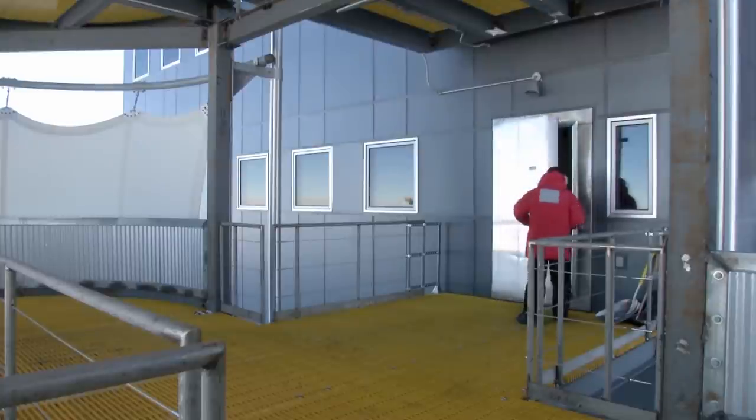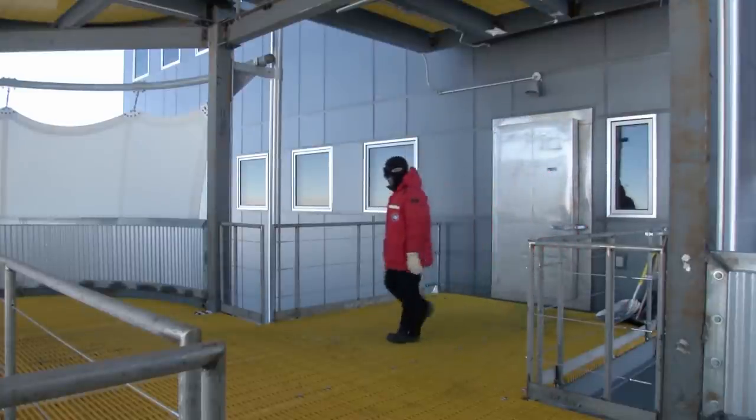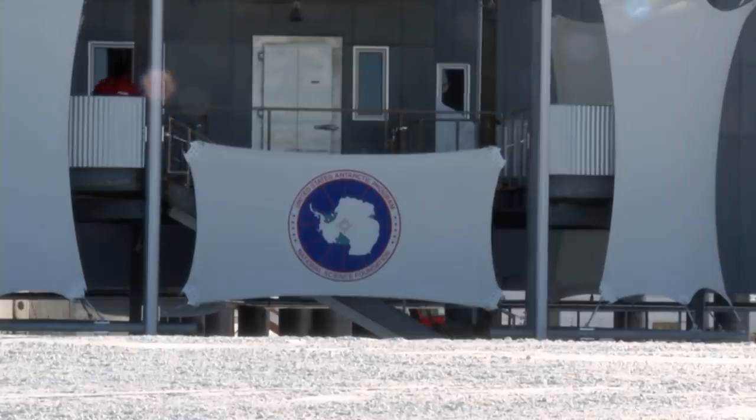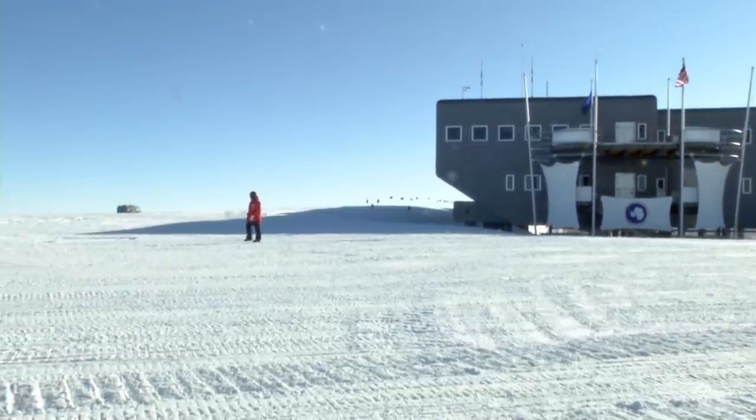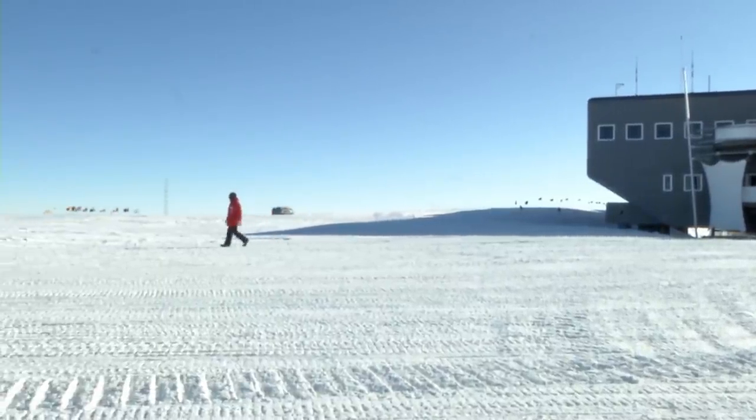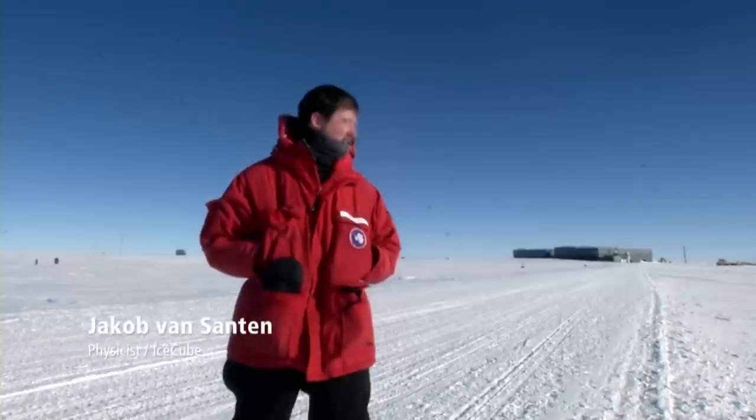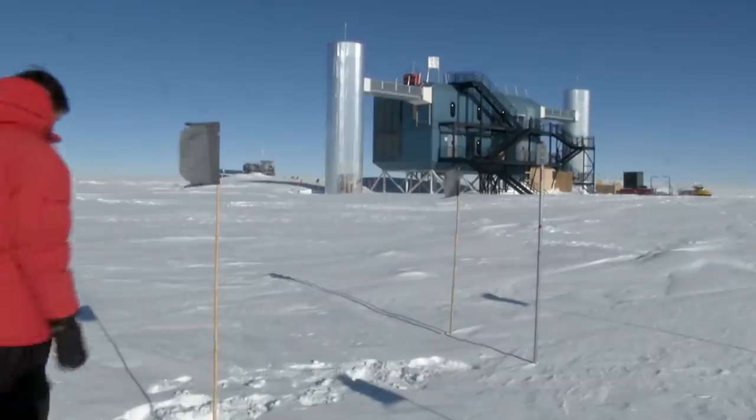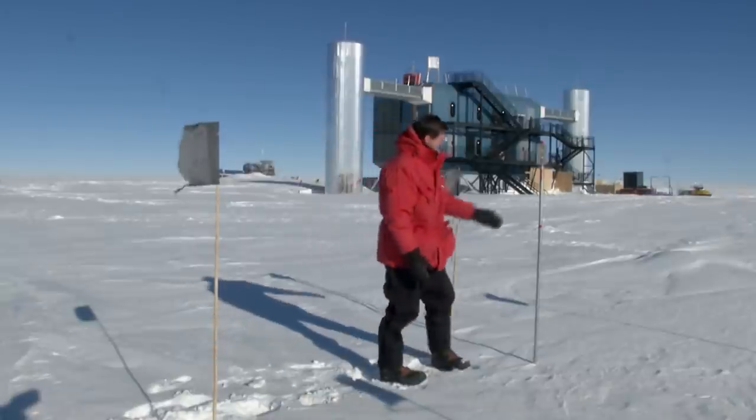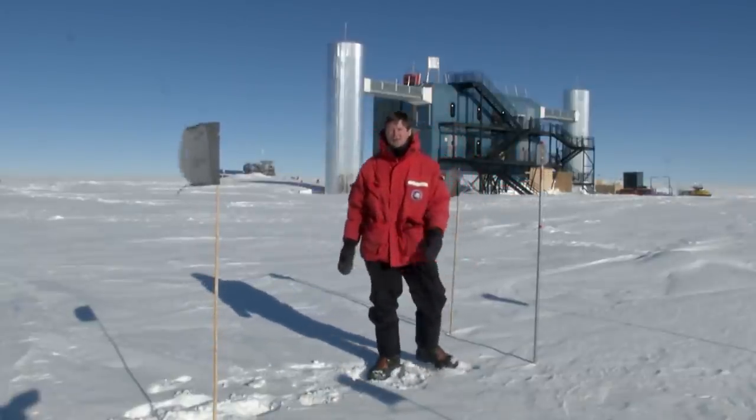In the Scott Amundsen Station at the South Pole, Jakob van Santen is now feeling at home. He can reach the IceCube on foot. It's a beautiful day, almost no wind, summer temperatures of minus 30 degrees Celsius, glorious sunshine. The station is about 500 meters behind me, and in front of me it's only about 500 meters to the IceCube laboratory. I'm going there now to see how our detector is doing.